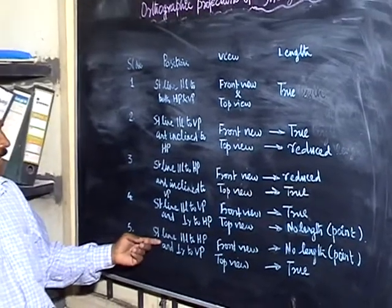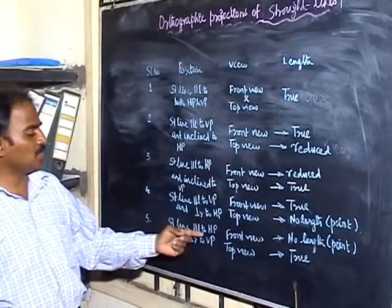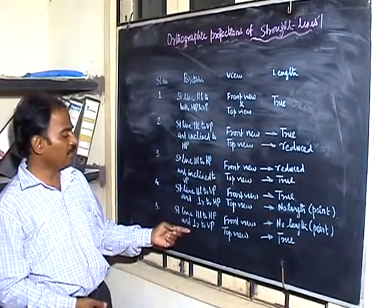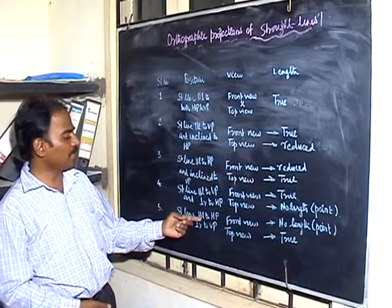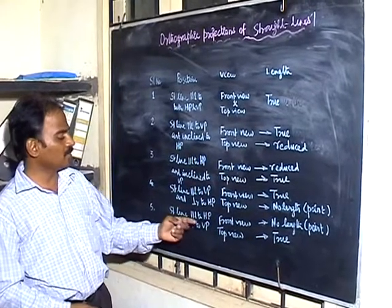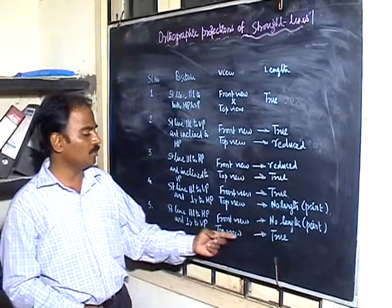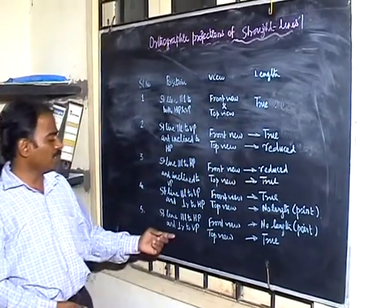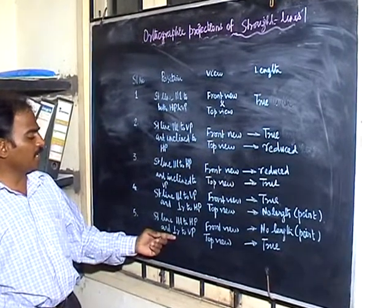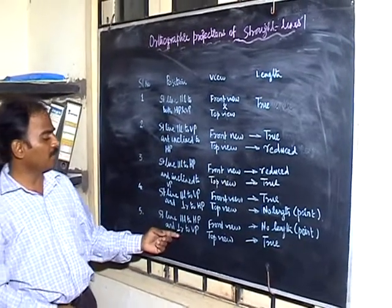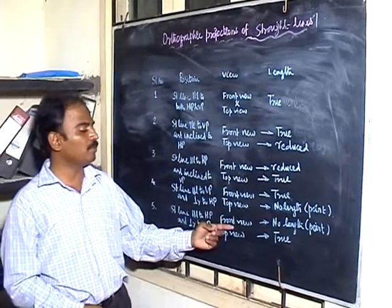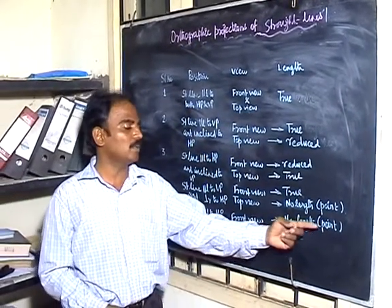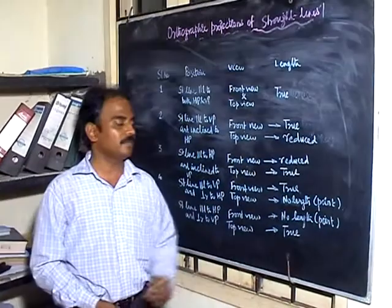In the fifth case, the straight line is parallel to HP and perpendicular to VP. Since it is parallel to HP, the top view gives the true length. Since it is perpendicular to VP, in the front view you will never get any length — you will get only a point.